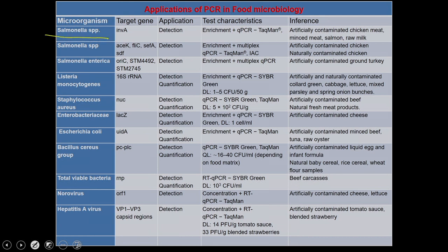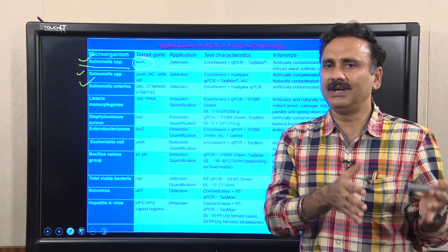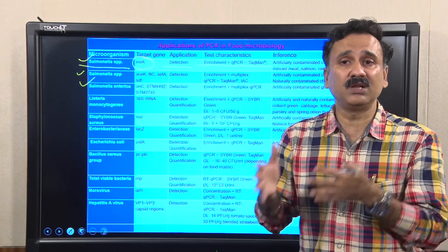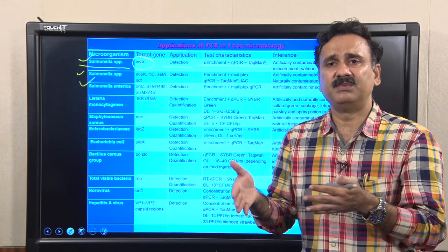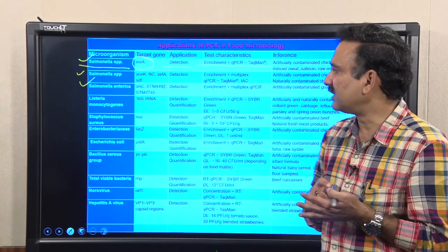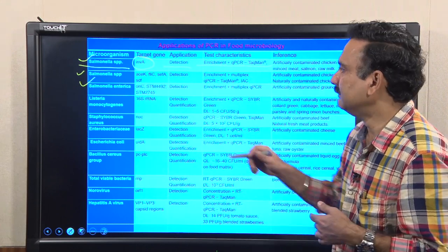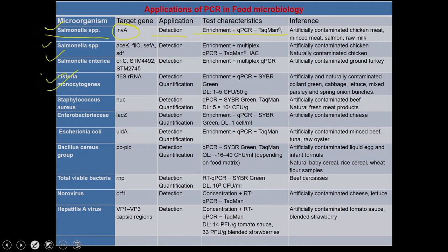In food microbiology, Salmonella is detected using the target gene NVA with qPCR and TaqMan methods. PCR allows detection not only of a particular type of bacteria but also of specific species. Besides Salmonella, you can also detect Listeria, Staphylococcus aureus, Enterobacteria, E. coli, Bacillus, and total viable bacteria — determining whether there is any bacterial infection in the vegetable or food material.